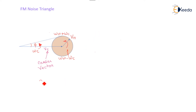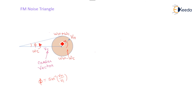The maximum value of the phase deviation phi is given by sine inverse of Vn divided by Vc. Every time it measures how much effect the noise voltage has when superimposed on the carrier, and according to that the relative change in phi is taking place.